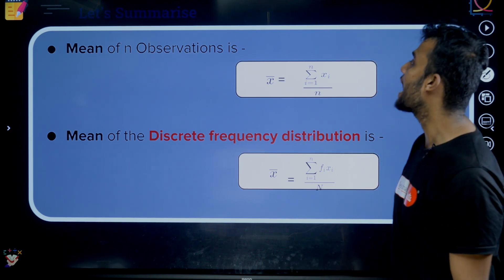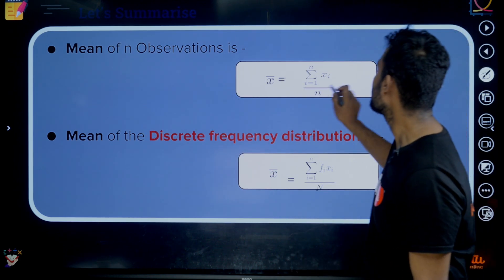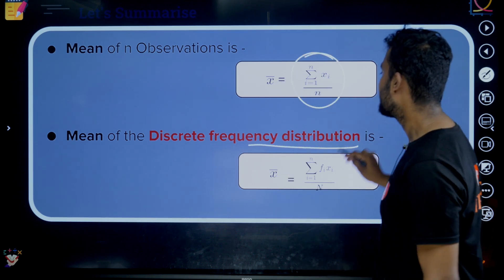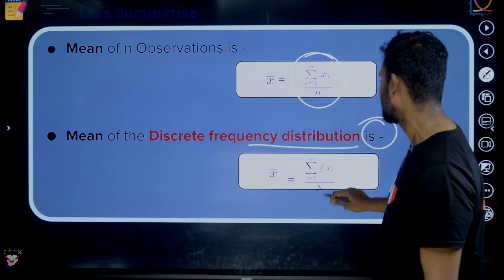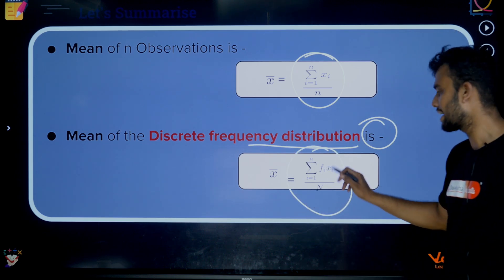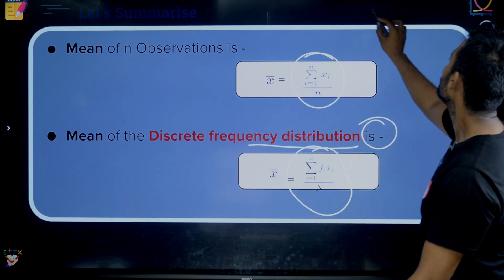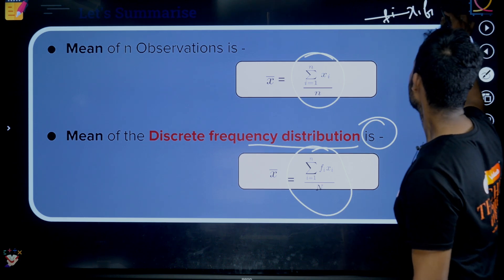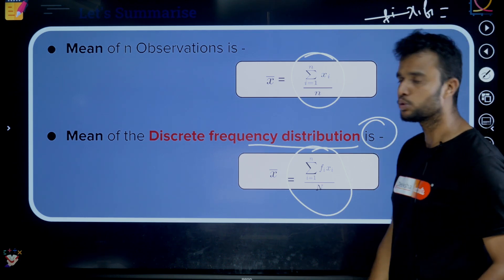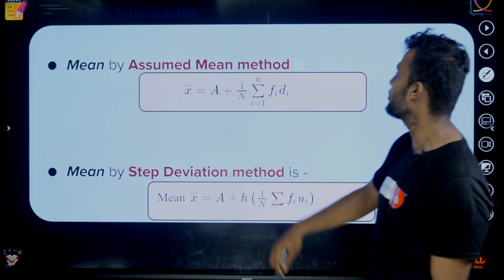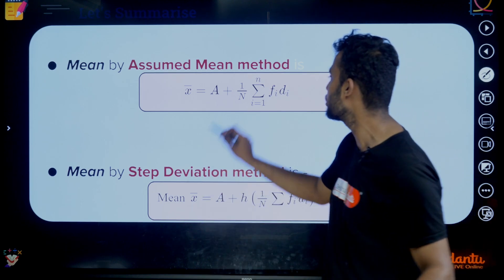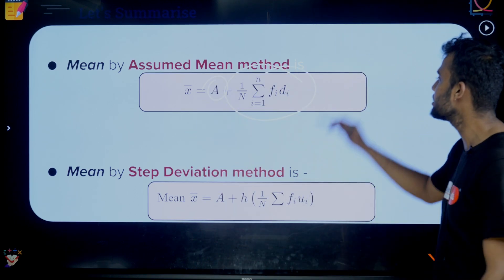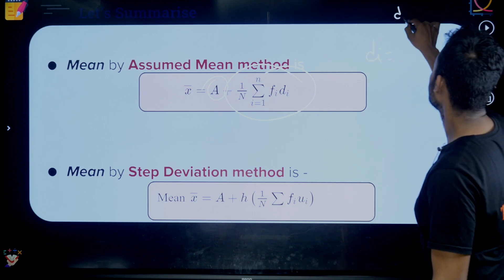Next, statistics. Mean is found using: mean = Σxi / n. For discrete frequency distribution using the direct method, mean = Σfi·xi / n. First find fi, make a column for xi and fi·xi, add those values. Then, assumed mean method: Di = xi − A, where A is always chosen as the midterm.